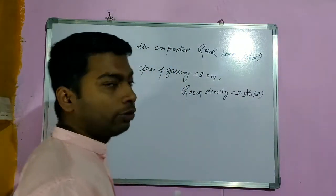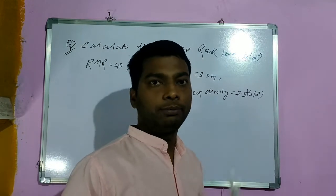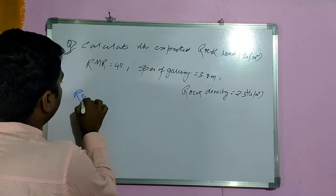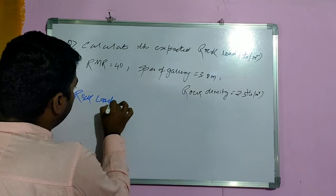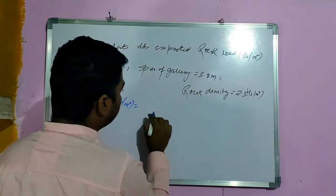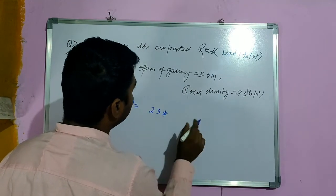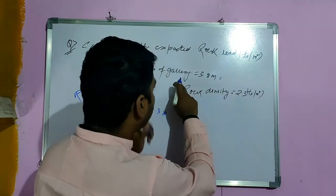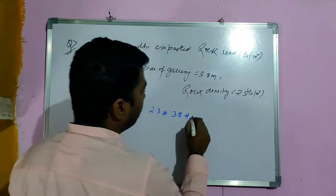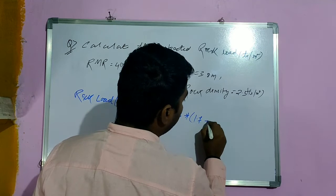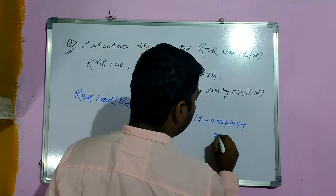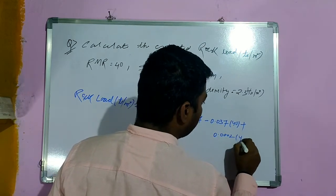Calculate and apply the formula to get the answer. The rock load formula: rock density into width of gallery 3.8, using formula 1.7 minus 0.037 RMR plus 0.002 RMR square.